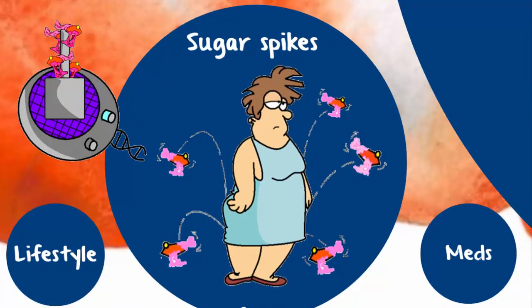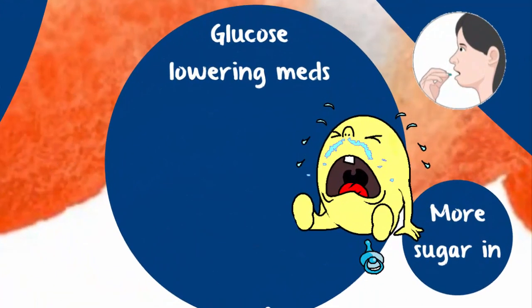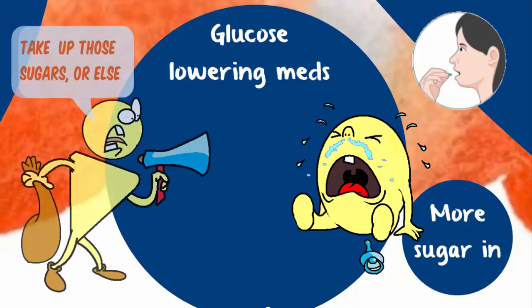You've heard of the war against sugar. Odds are, if you're watching this video, you're in the trenches right now. Sugar spikes can be fought with lifestyle and drugs. There are quite a few different kinds of glucose-lowering medications, and they work in different ways. For many of them, they lower sugar levels in the blood by putting more sugar into the cells.